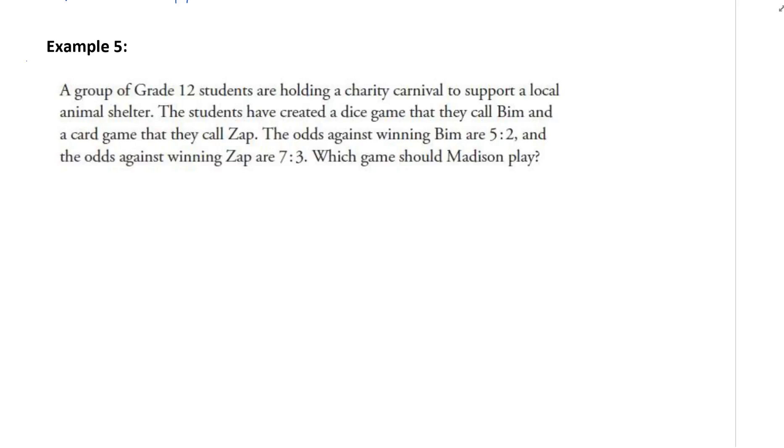Again, you might want to do probability. How do we figure out the probability of winning BIM? The odds against are 5 to 2. The total number of outcomes would be 5 plus 2. Because that's the odds against, our favorable outcomes would be 2. So that's the probability of winning.